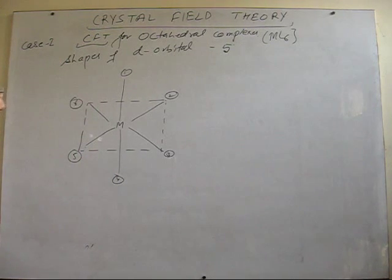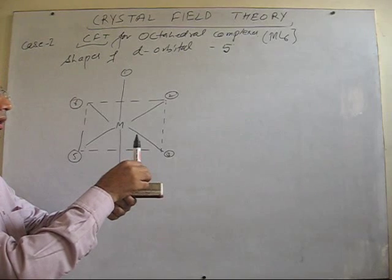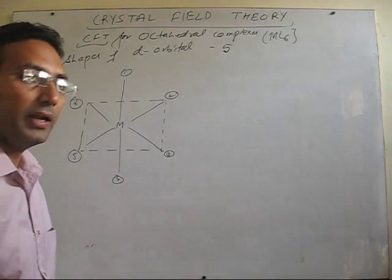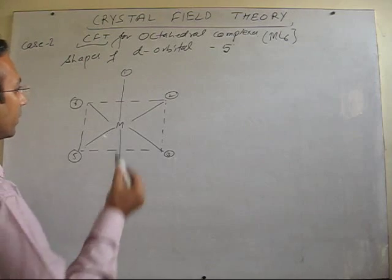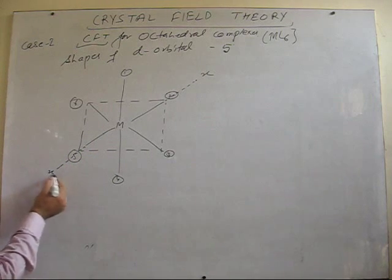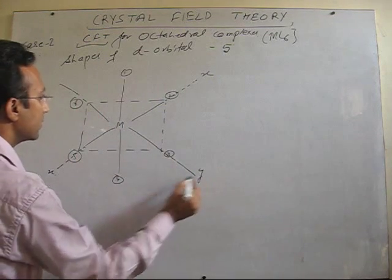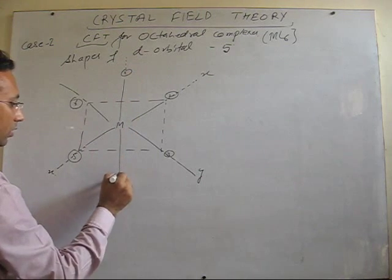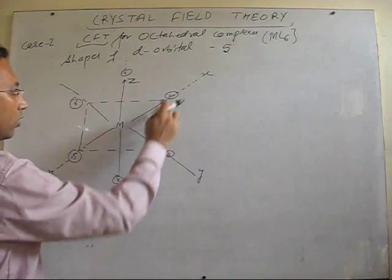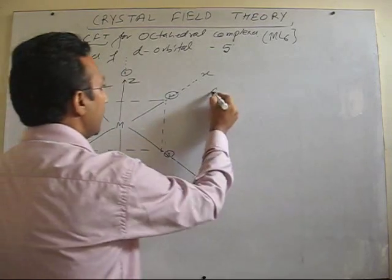If we closely observe, in the octahedral arrangement, one bond is above and one is below the central plane, forming a 90-degree angle with the plane. Taking this as the x-axis, the perpendicular direction as the y-axis, and the axis perpendicular to both as the z-axis, we can see that all corners of the octahedron lie along these three axes.